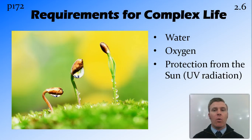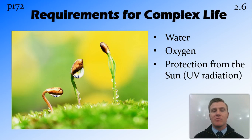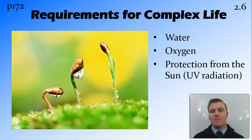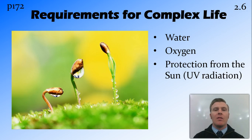Firstly, we'll look at the requirements for complex life. The requirements are water, oxygen, and protection from the UV radiation from the sun. On the early Earth, there was plenty of water, so we don't have any problems there. There wasn't any oxygen, which is required for respiration in aerobic organisms and had not yet been made. The UV radiation from the sun, because there is no ozone layer, was getting all the way to the surface of the Earth, meaning that the organisms around needed to be very hardy and couldn't be sensitive to that UV light.